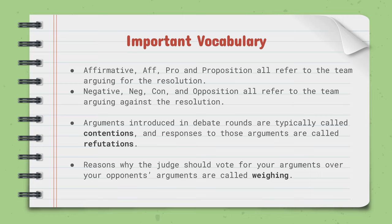The arguments we introduce are usually called contentions, and the responses to those arguments are called refutations — though usually people just call them responses. Refutations is the proper term, but responses is more common. Weighing is the reasons why the judge should vote for your arguments over your opponent's. So rather than saying a contention isn't true, it's saying: even if it's true, you should prefer our contention because it affects more people or hurts more marginalized communities. Basically, why should you prefer our arguments over theirs?